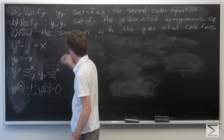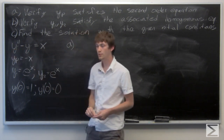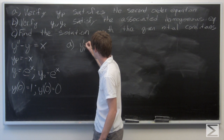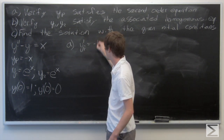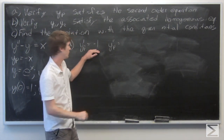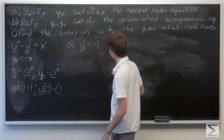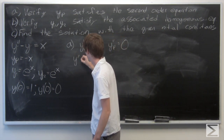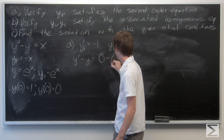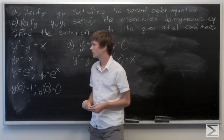For part a, we're going to take our particular solution and take the derivative twice, plug it in for y double prime, and then plug in our particular solution for y. The first derivative of the particular solution is equal to negative 1. The second derivative is the derivative of negative 1, which is just 0. So we plug in 0 for y double prime and negative x for y, and we see that this equals x as it should. That verifies part a.